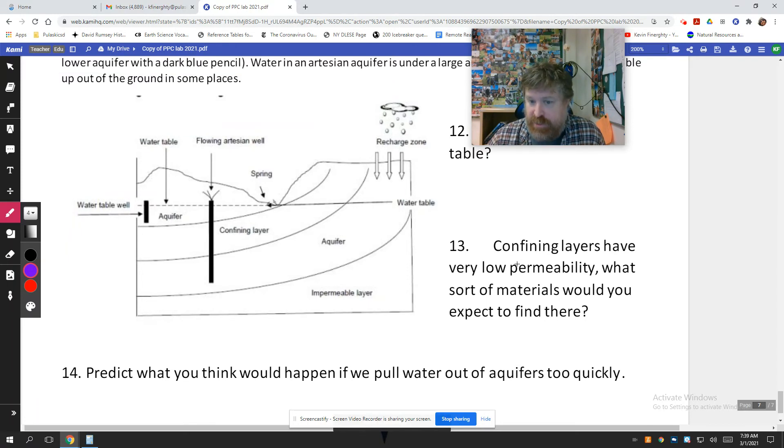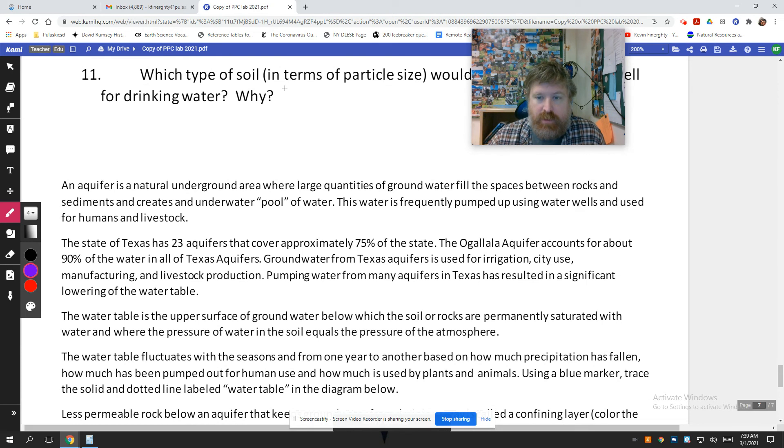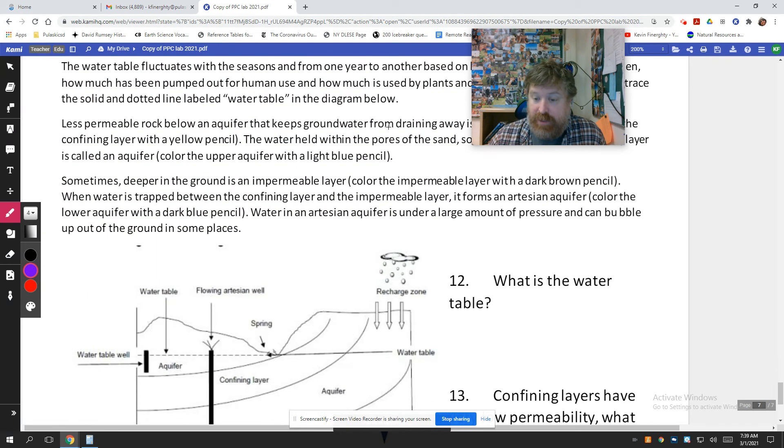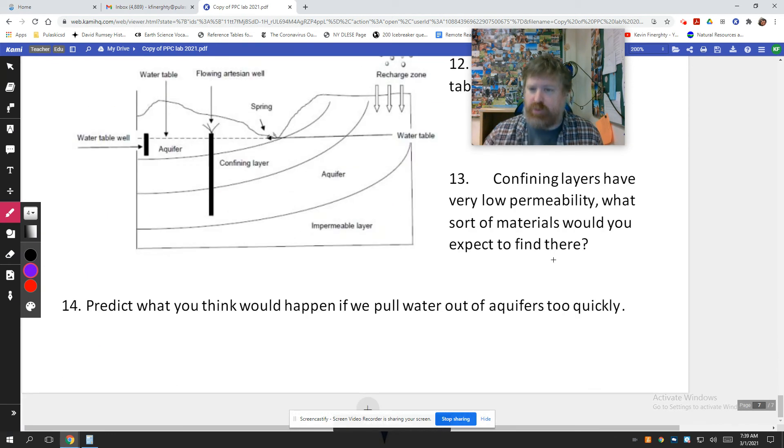Confining layers that don't let water through have a very low permeability. So what sort of materials? This question here is almost the opposite of this question. We want sandy soils because they're more permeable for a drinking supply for a well. Confining layers, I worked on a project around a dump, a landfill over in the Finger Lakes, near Geneva. They would pack down layers of clay. There's your answer. So that is, if water trickled down through the garbage, it would hit that confining layer of clay and not work its way down into the surrounding soils.